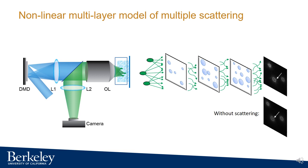Compared to the image without scattering, we can tell the pattern is distorted, which contains the important information about the unknown refractive index of the 3D phantom.